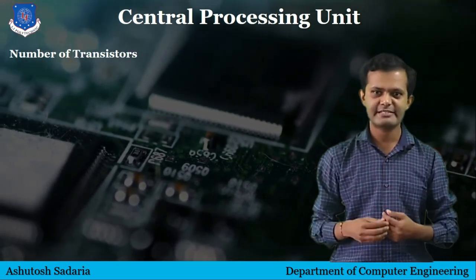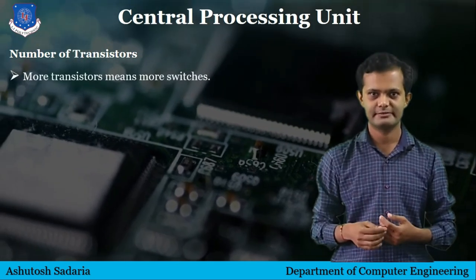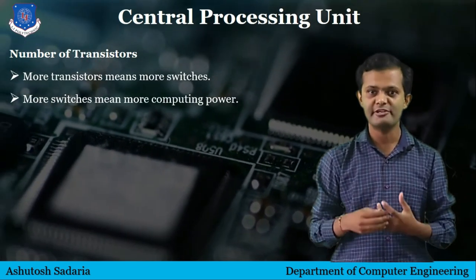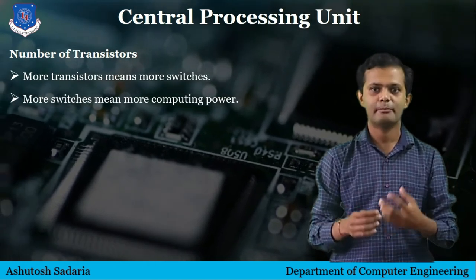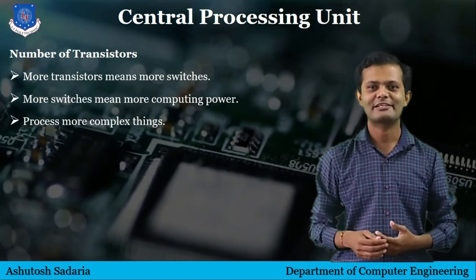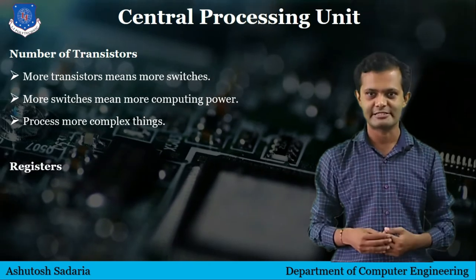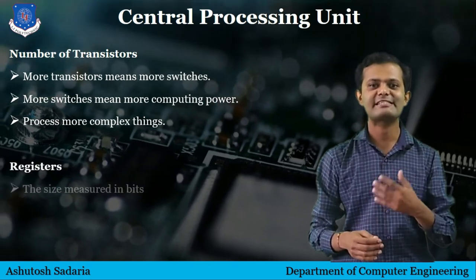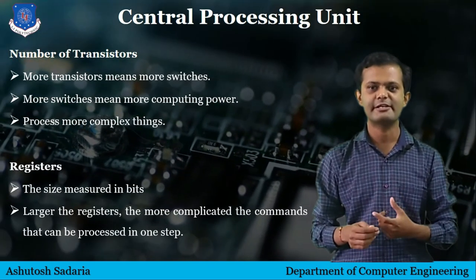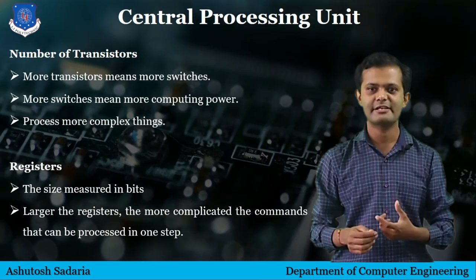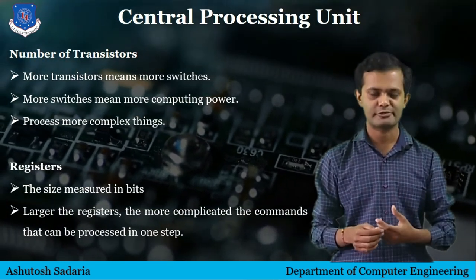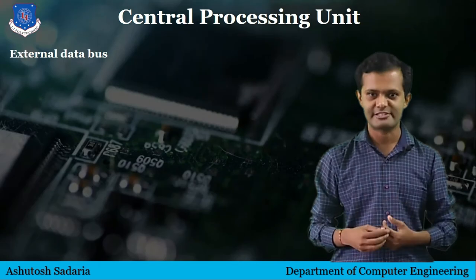The next is number of transistors. More transistors means more switches, and more switches means more computing power — the computer can process more complex things. The next is registers. Register size is measured in bits. The larger the registers, the more complicated the commands that can be processed in one step.